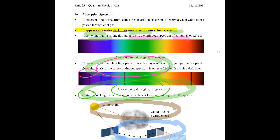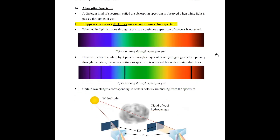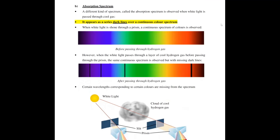That is emission spectrum. There is also another different kind of line spectrum called absorption spectrum. Absorption spectrum is usually observed when you pass white light through a certain cool gas. What you will see is that it tends to appear as a series of dark lines over a continuous color spectrum.